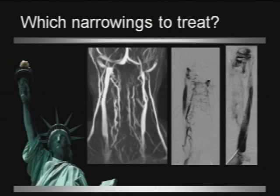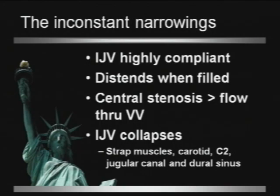So which narrowings to treat is really a challenge — this narrowing up here, or here, or here? It's very confusing, and I thought IVUS was quite helpful for me.